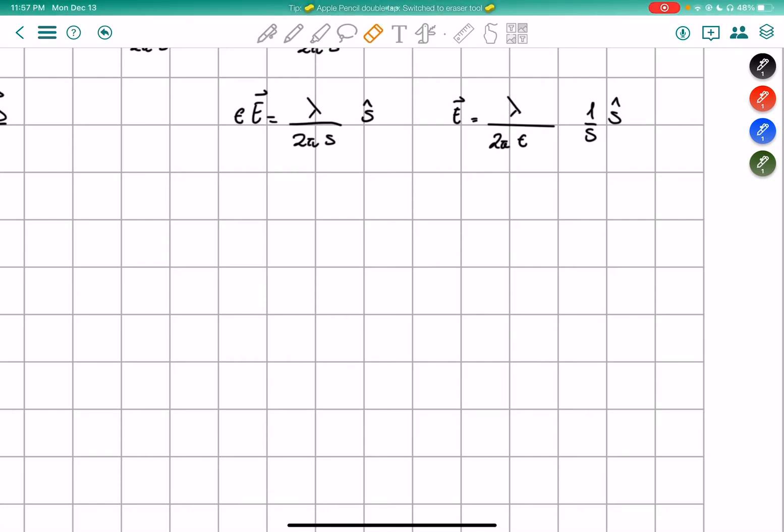Well, when we're outside, the electric field is going to be equals to lambda over 2 pi epsilon naught times 1 over S in the S hat direction.